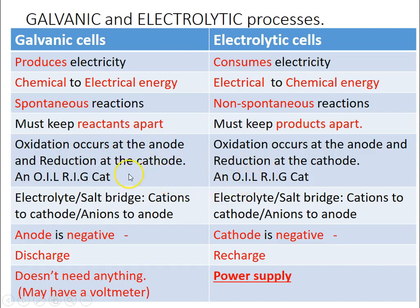They'll try and confuse you but don't let them. The anode is always where oxidation — loss of electrons — occurs, and the cathode is always where reduction — gain of electrons — occurs. That's always true. The cations in the electrolyte, the positive ions, will move towards the cathode where reduction is happening and extra electrons are being added — you need to balance that negative charge by adding positive cations. The anions will move towards the anode because electrons are being lost there, so negative ions move across to balance the charge.